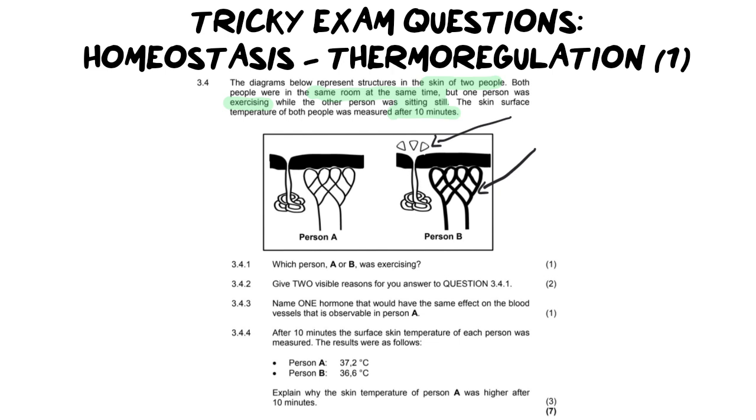Now the two differences here is that first of all person B is sweating. That is sweat coming out of a sweat gland and then person B also has their blood vessels that are dilated which means they are bigger, which means more blood is flowing through them and ultimately it means this person is hotter and they are hotter because they've been doing something and more than likely the person who is person B is the exerciser and person A is probably the sitting still person.